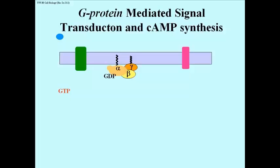Now let's take a closer look at how G-protein-linked signal transduction works to produce the second messenger molecule, cyclic AMP, in target cells.